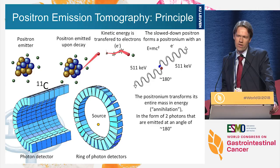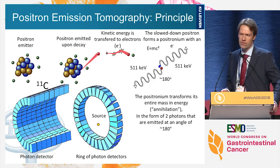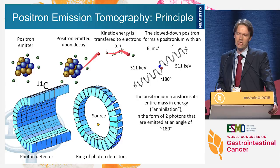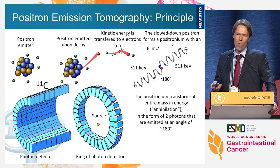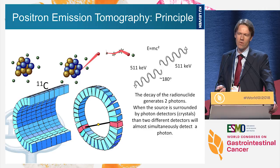Positron emission tomography, PET, uses positron emitters, which are radioactive atoms that upon decay will emit a positron. This positron will get rid of some kinetic energy and then annihilate with its counterpart, an electron, sending out two high energy photons of 511 keV. If we put a ring of crystals sensitive to these photons around the source, when two crystals get hit at almost the same time, we know that one annihilation event has taken place on this so-called line of response.